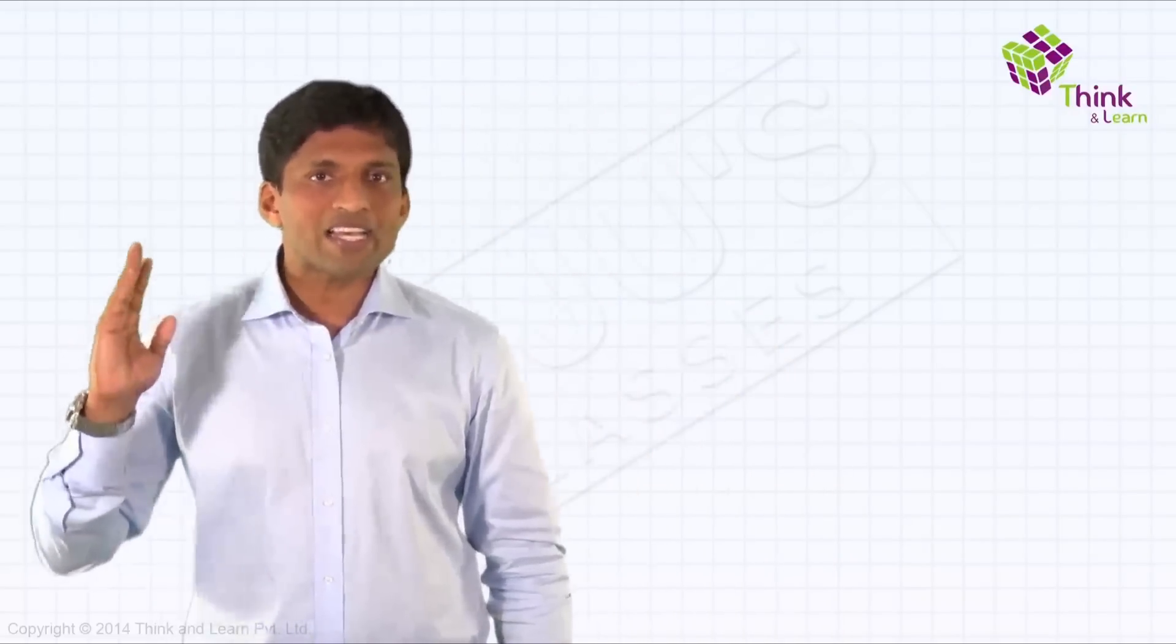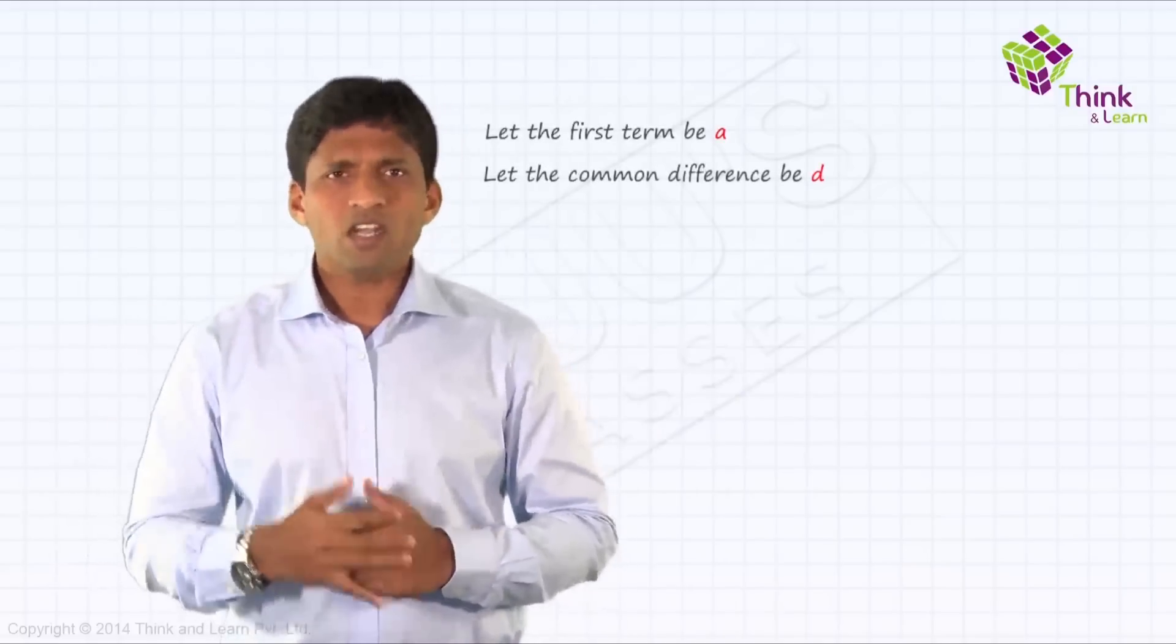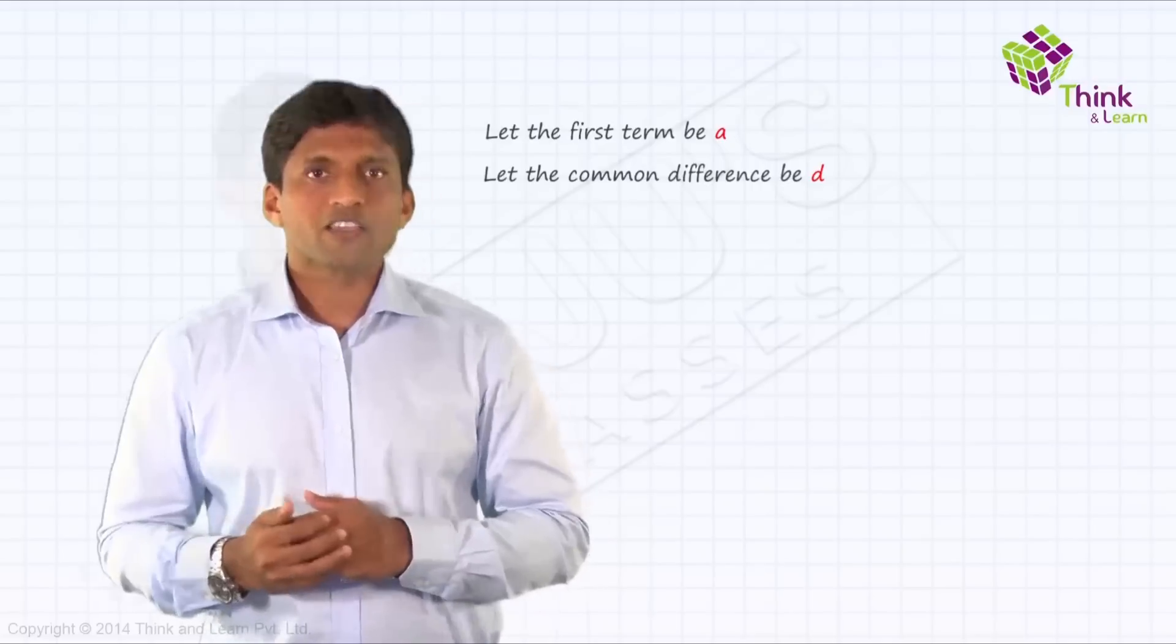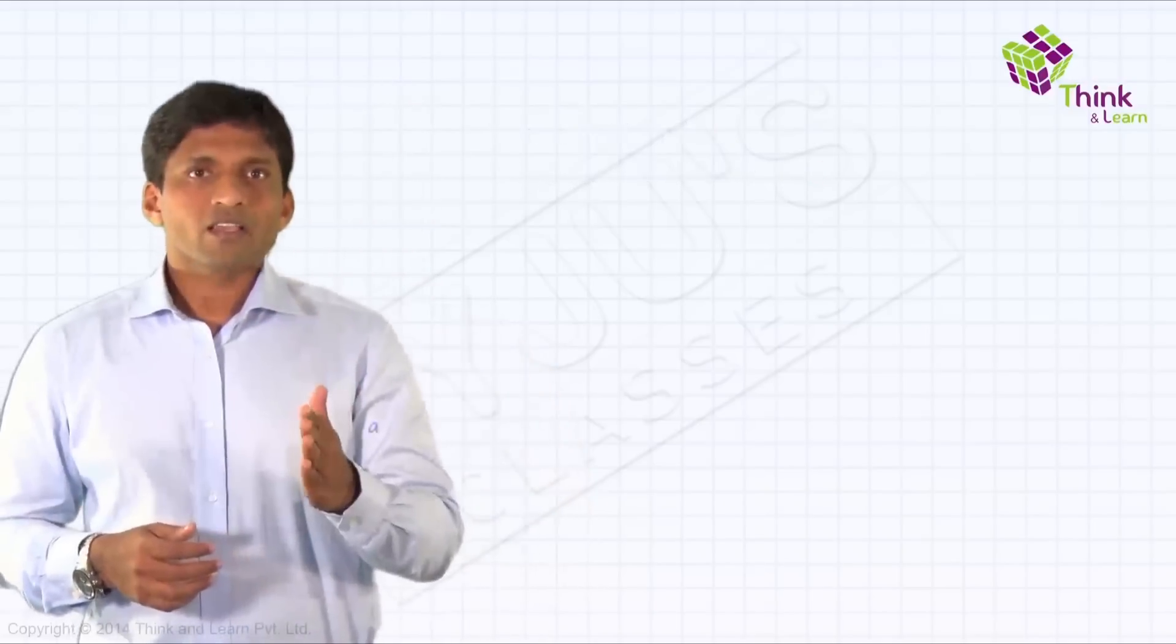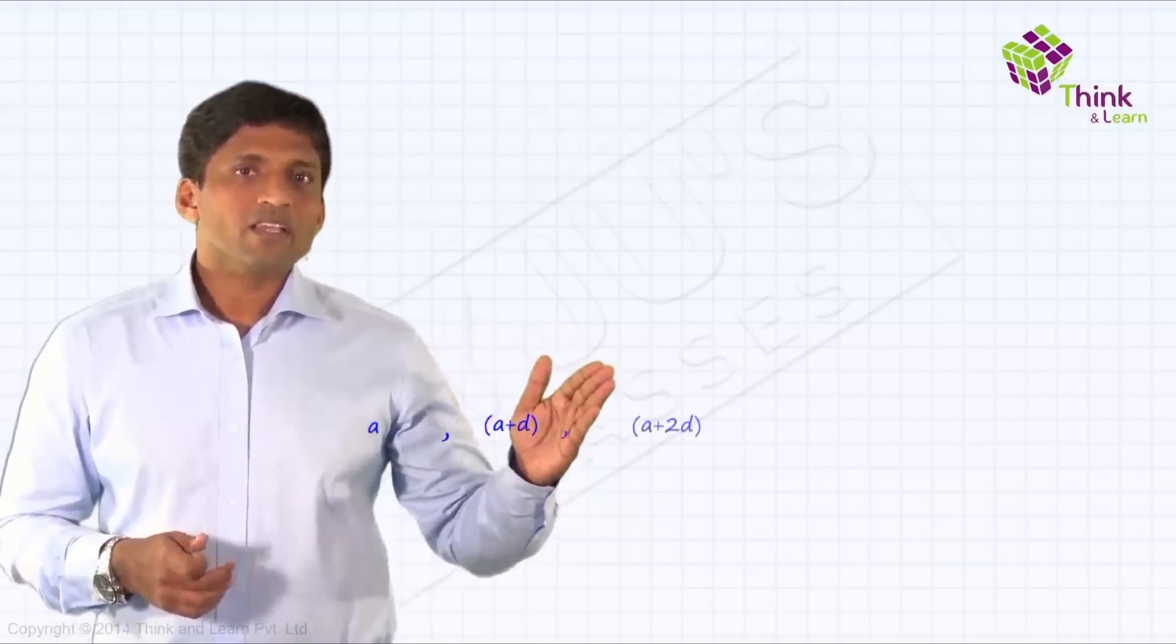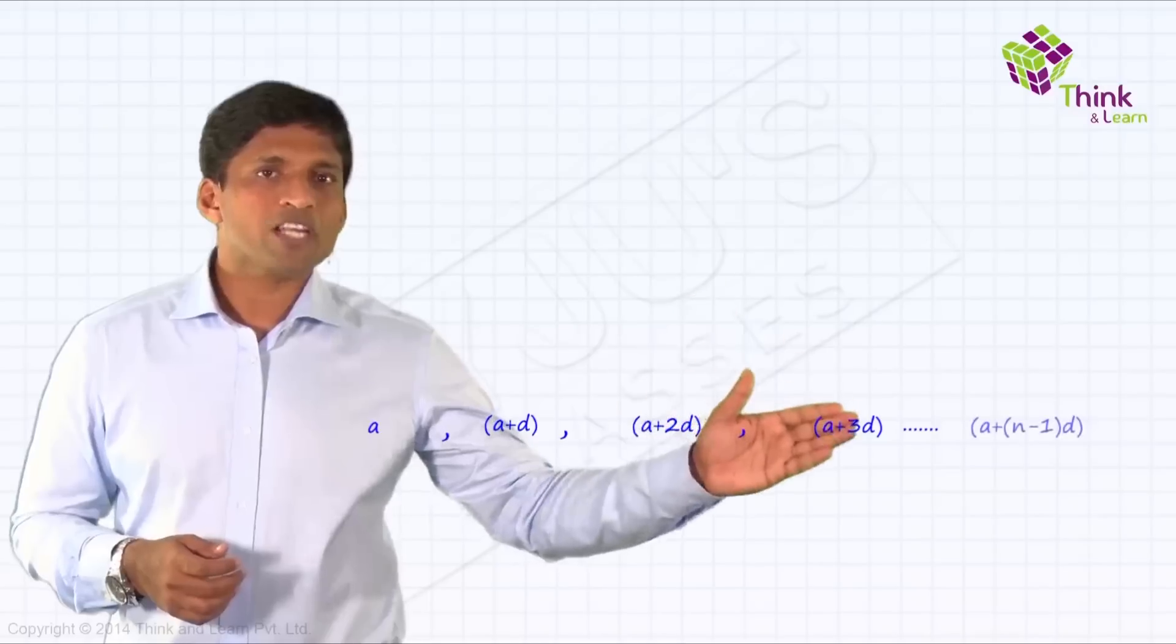So let's take, go back to first term. If I take it as A and common difference if I take it as D, I can write a general form of an arithmetic progression like this: A, A plus D, A plus 2D, A plus 3D, and nth term I will write it as A plus n minus 1 into D.